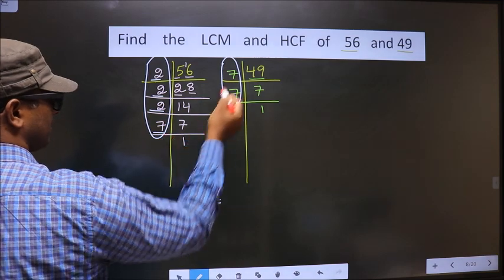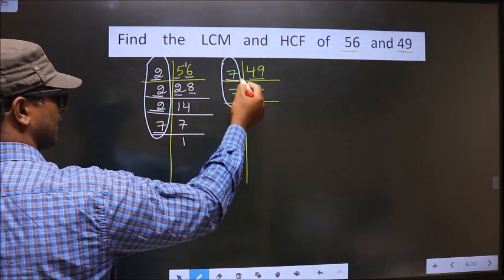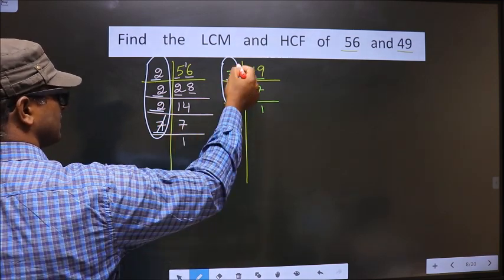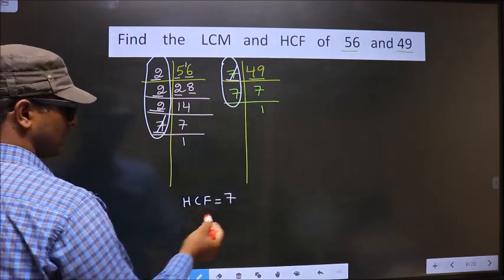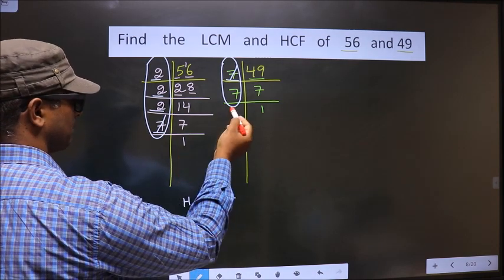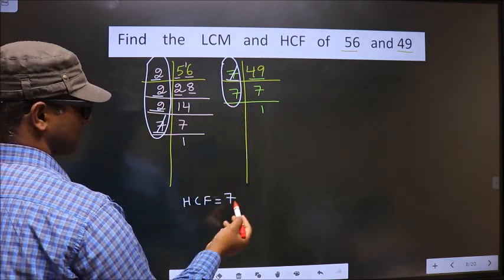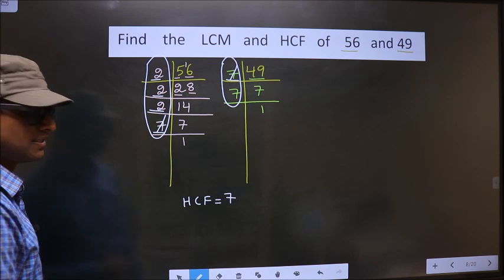Go to the next number 7. Do we have 7 here? Yes. So, you cut 7 and 7 here. No more numbers are left. Only one number is common present in these two places. So, this is our HCF.